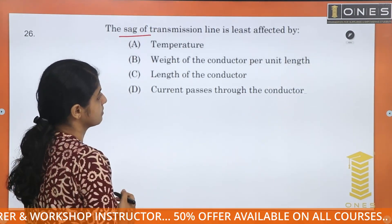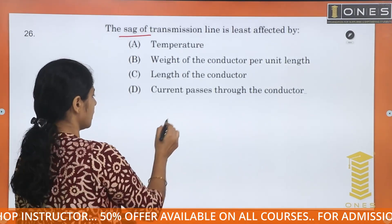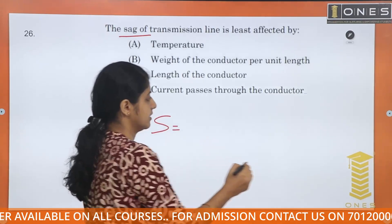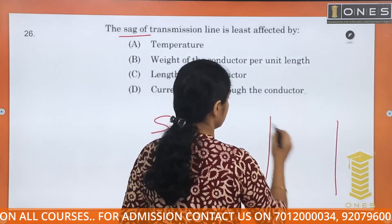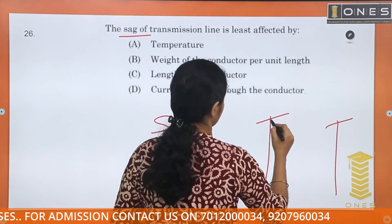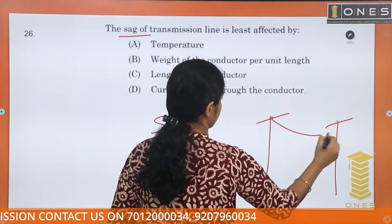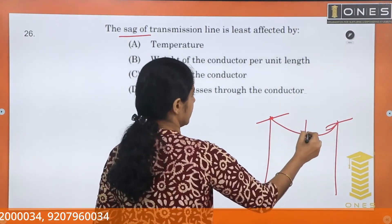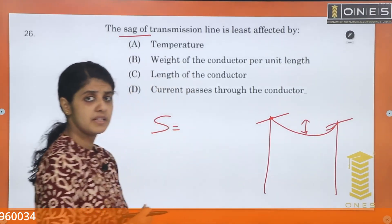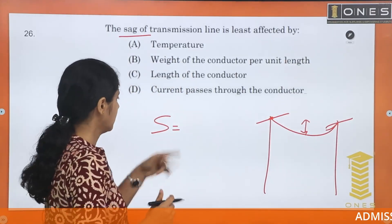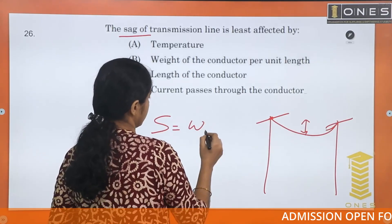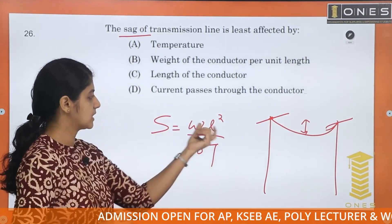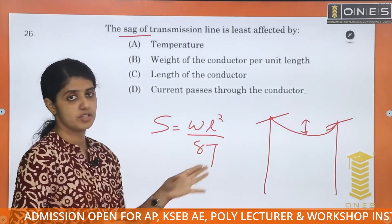When current passes through the conductor, we need to learn the SAG equation. The SAG equation is given by WL²/8T, where W is the weight of conductor, L is the length of conductor, and T is the tension.